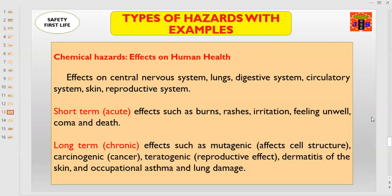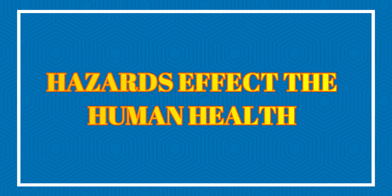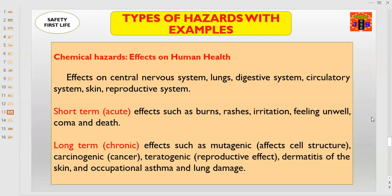As we discussed in the last training session, the different types of hazards with examples. In this training session, I'll tell you how the different types of hazards affect human health, what these effects are, what the level of these effects is, and how occupational safety and health hazards become fatal and catastrophic. So without wasting time, let's get started.